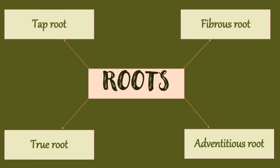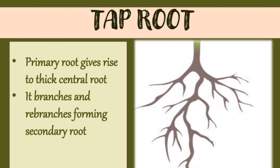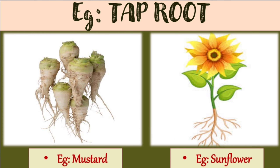There are four types of roots: taproot, fibrous roots, true roots, and adventitious roots. The first is taproot — the primary root gives rise to a thick central root called the taproot, which branches and rebranches forming secondary roots. This type of taproot is seen in dicotyledonous plants like mustard and sunflower.